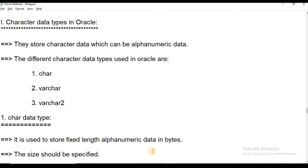We covered variable data types in the last session. Now we start character data types. Character data types have three subtypes: CHAR, VARCHAR, and VARCHAR2.